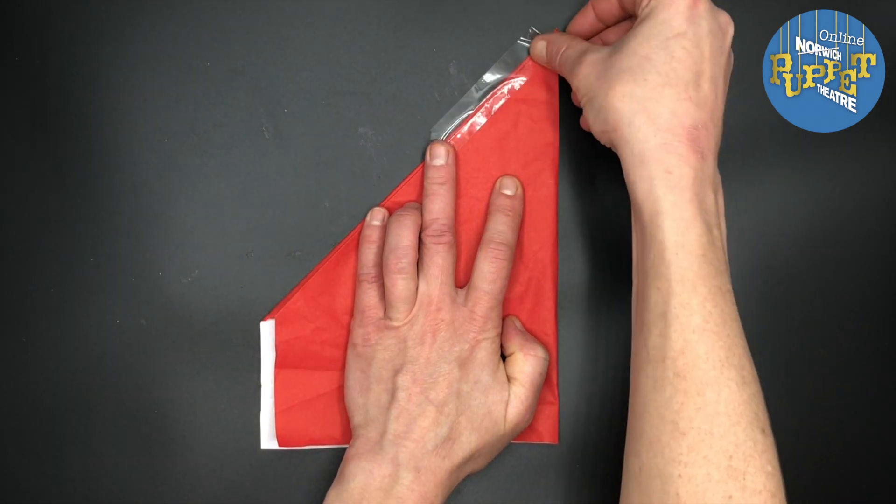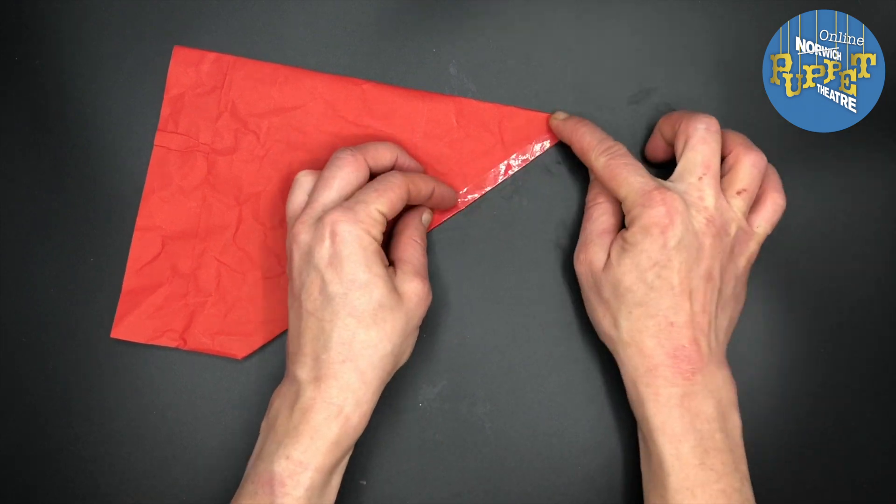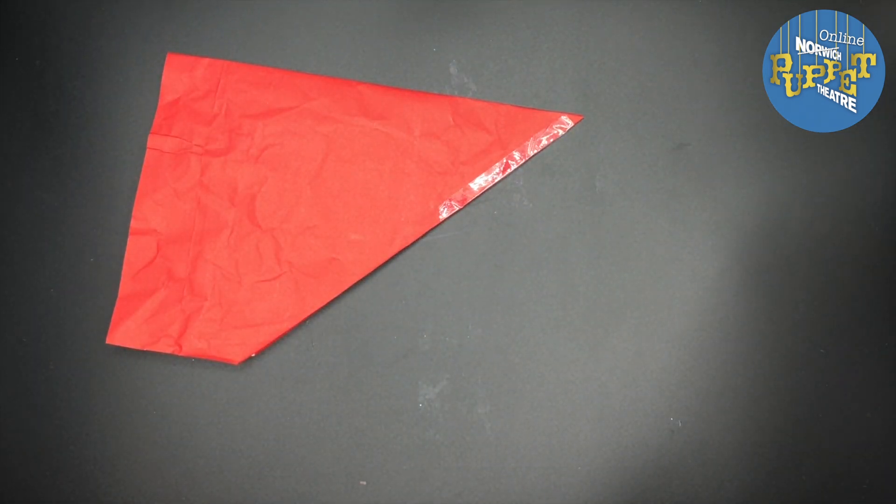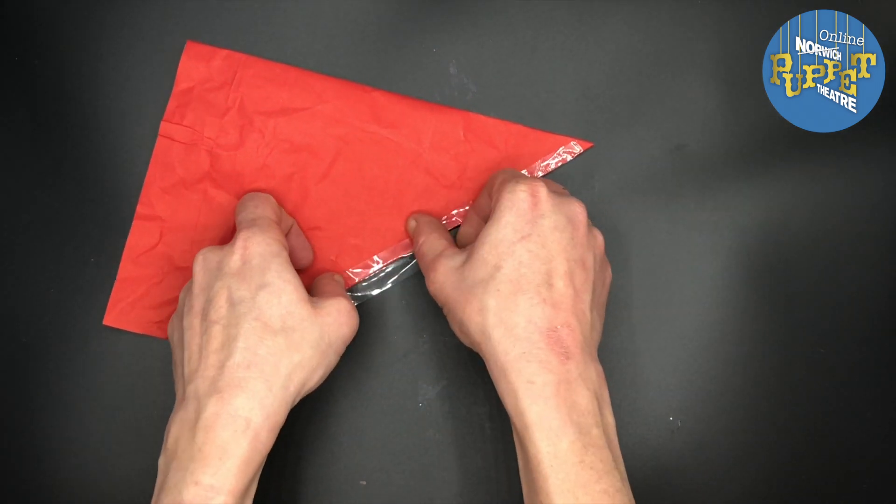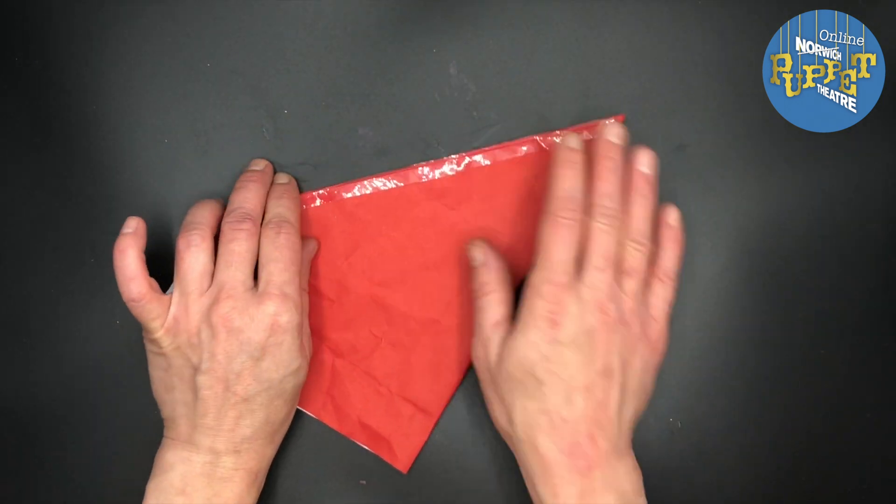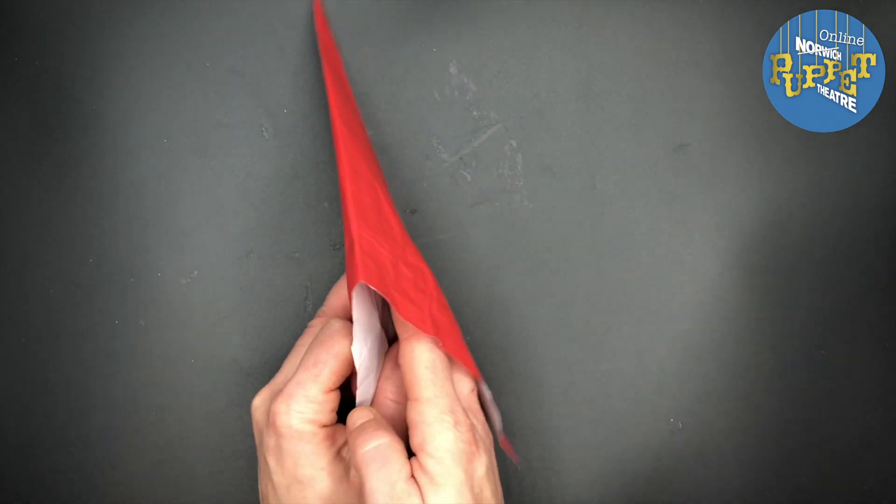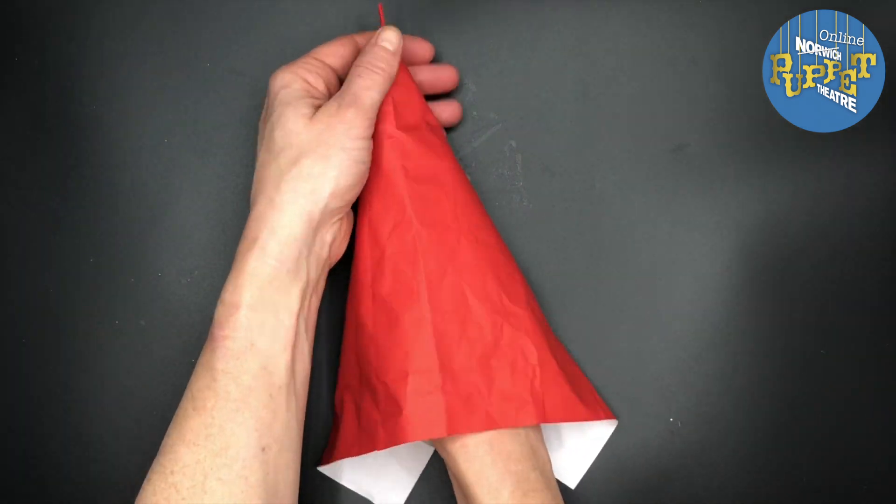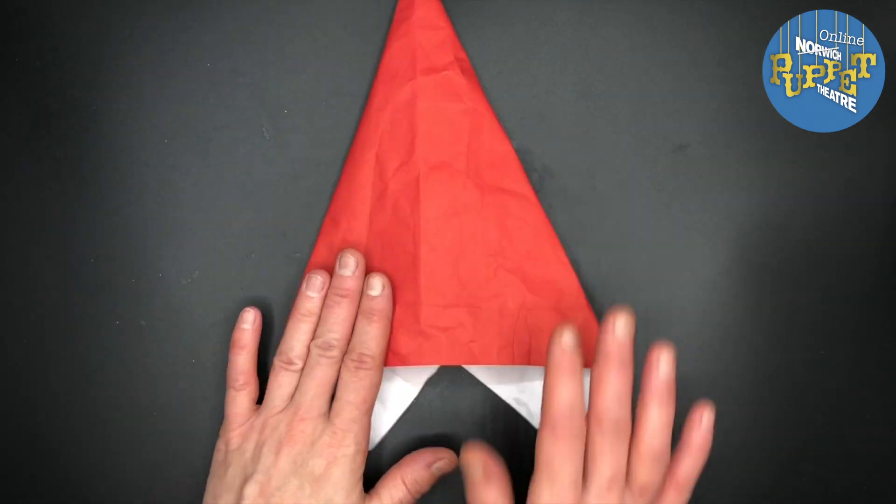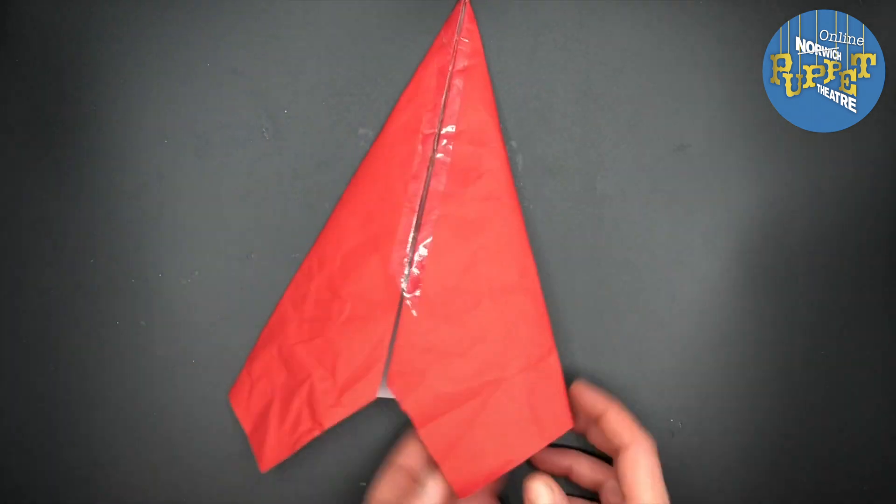Tape your diagonal folds together. This is going to be your puppet body. The point at the top will be your puppet's hat. Opening your puppet body through the gap at the bottom, refold and flatten your paper so that you have the tape seam at the back.